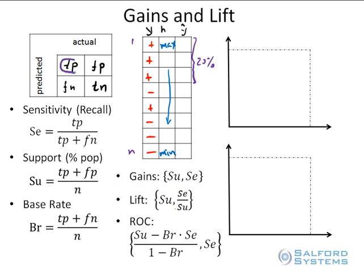Sensitivity takes true positives as a fraction of the total number of positives out there in the dataset or population. With the standard confusion matrix — true positives, false positives, false negatives, true negatives — sensitivity becomes the percentage of the class of interest that is captured in this upper portion of the sorted dataset.